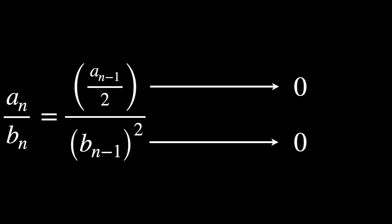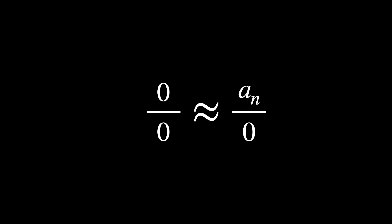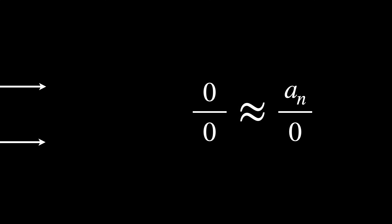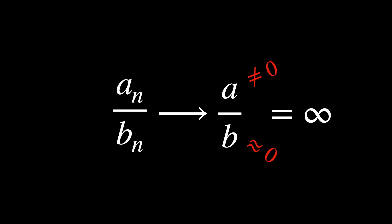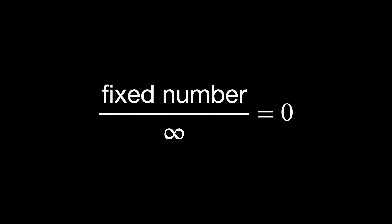So the indeterminate form 0 over 0 can be transformed into a determinate form once we notice that after enough iterations, we'll get to a number that is almost equal to a fixed value divided by 0. In other words, the sequence tends to a number different from 0 — the numerator over a number very close to 0, the denominator — and thus we say that the result is infinity. Loosely speaking, a fixed number divided by infinity is 0.